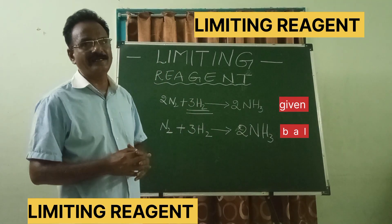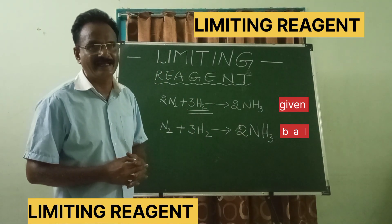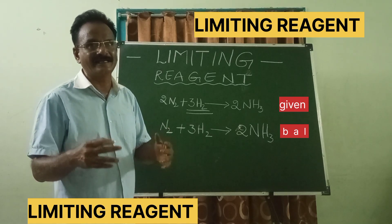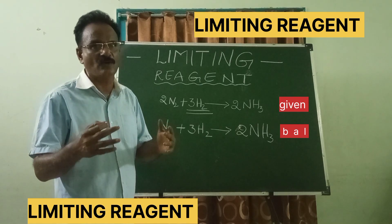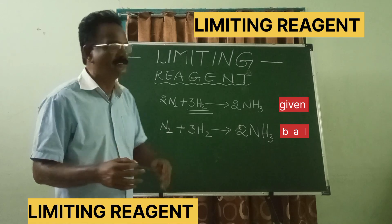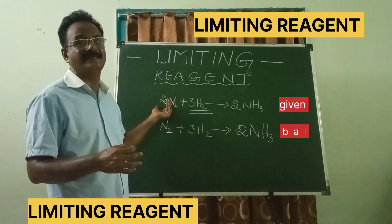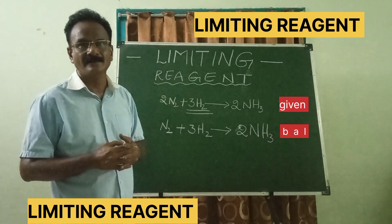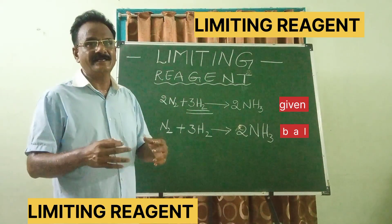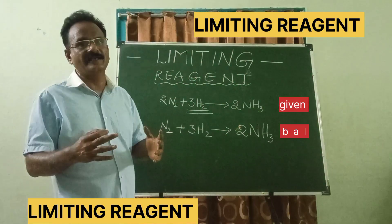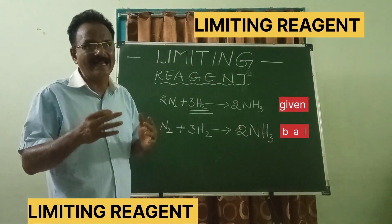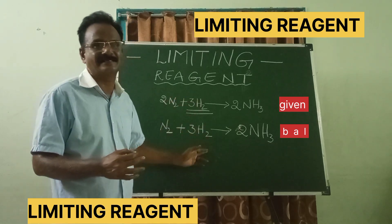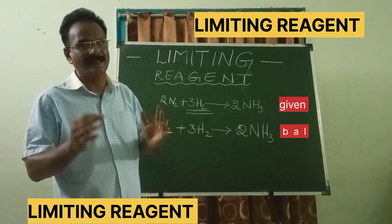Students are often confused. As per the definition, the reagent with less quantity is the limiting reagent, so they may think nitrogen is the limiting reagent. But when you write the balanced reaction corresponding to the given reaction, then you can get clarity on which is actually the limiting reagent.